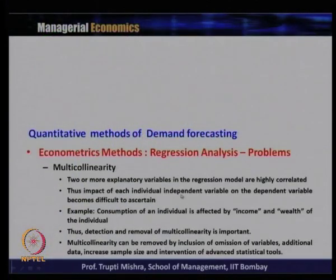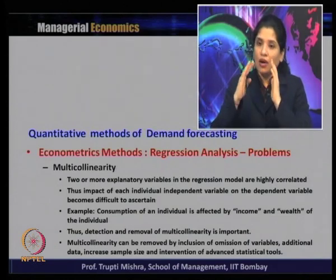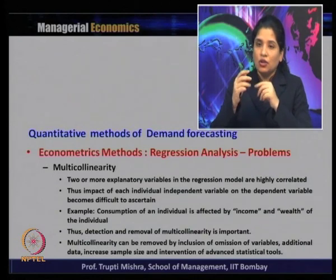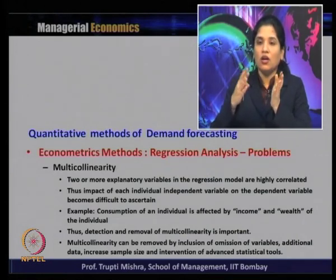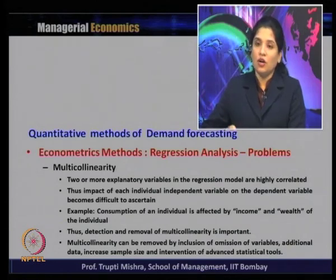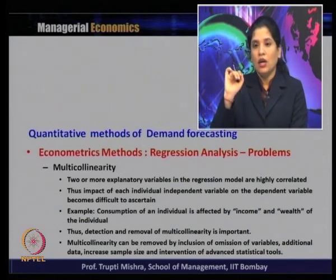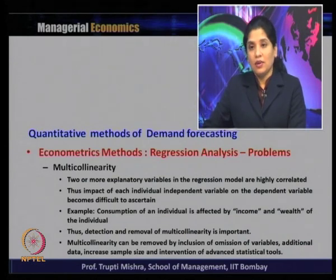What are the problems in using regression analysis for demand forecasting? The first problem is multicollinearity — where two or more explanatory variables in the regression model are highly correlated, making it difficult to ascertain the individual impact of each independent variable on the dependent variable. For example, consumption is affected by both income and wealth, which are closely related. Multicollinearity can be removed by omission or inclusion of variables, additional data, increased sample size, or advanced statistical tools.